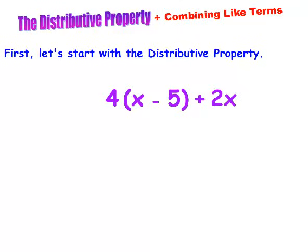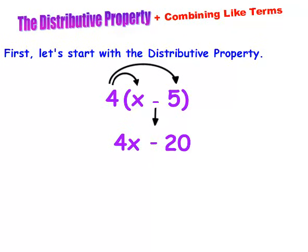Here's our first problem. First thing we're going to do is use the distributive property because there's a variable in the parentheses. Right now I'm going to make the plus 2x at the end go away so we don't get confused. First you multiply the 4 times the x and that's 4x. The next step is to bring down the operation, the subtraction sign. And finally you multiply the 4 times the 5, which is 20. Let's make that end part appear — it's not part of the distributive property, you just bring it down.